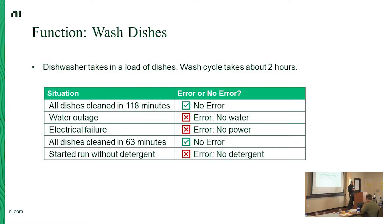All the dishes report successfully cleaned in 63 minutes and it reports no error — is that correct behavior? Should it have returned an error? The last case: the user started the run without detergent, and it throws an error saying it can't run. Is that right? You might simply want a rinse. I'm not going to answer that question yet — we'll come back.